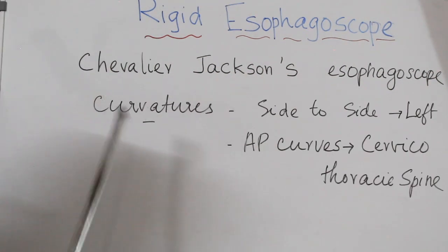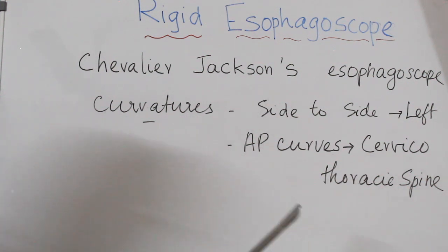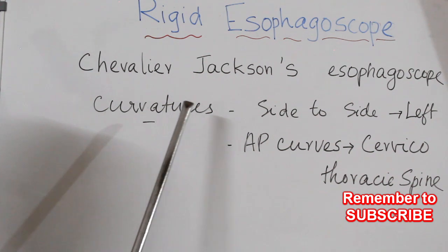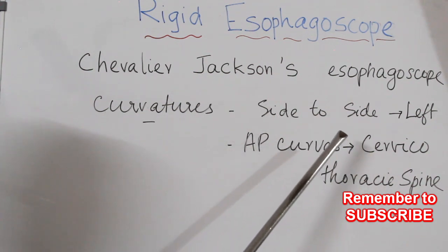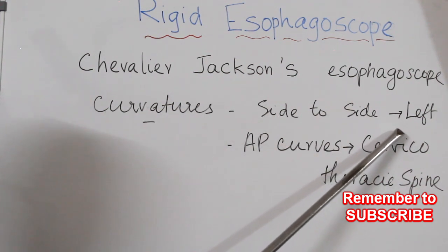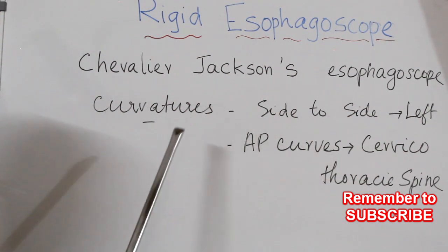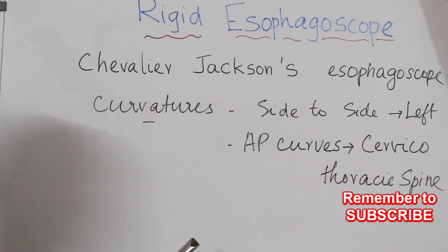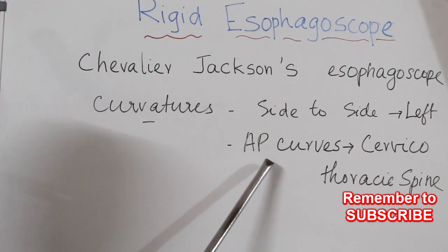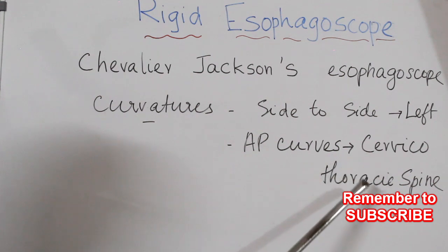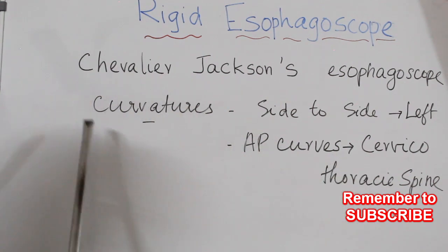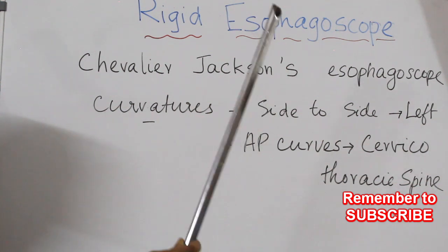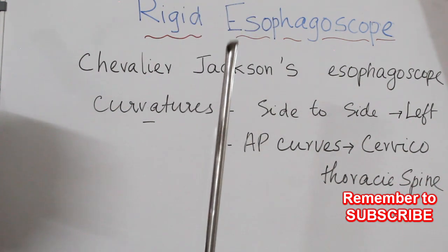The curvatures are in the esophagus, not in the esophagoscope. There are two side-to-side curvatures, both towards the left side — one at the root of the neck and another at the lower end. There are also anteroposterior curvatures corresponding to the cervical and thoracic spine. The rigid esophagoscope itself is a straight instrument.